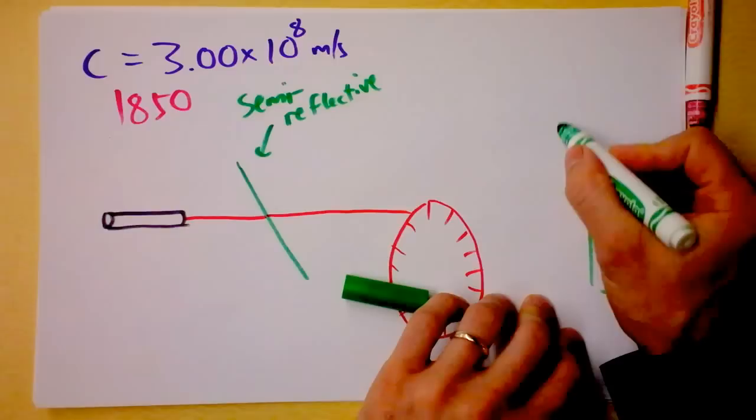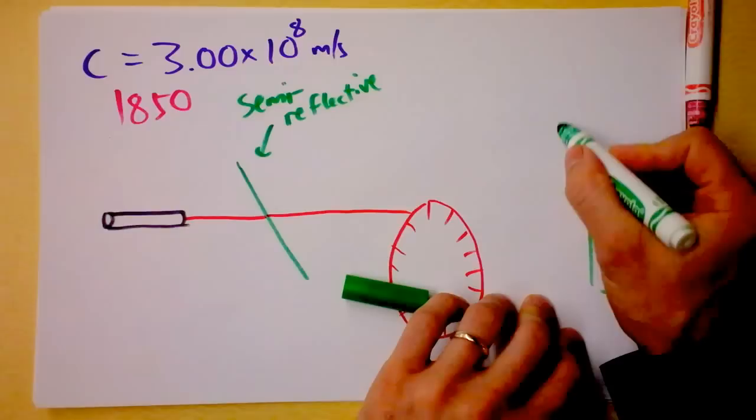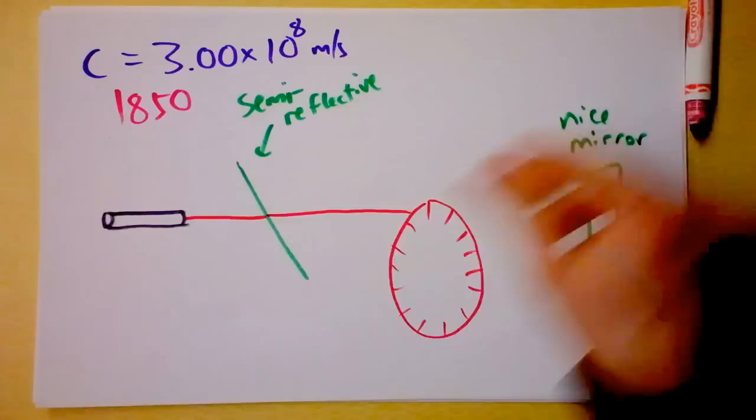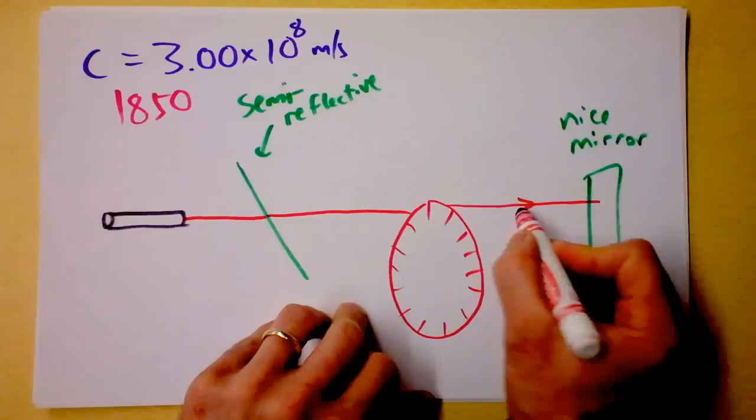This is a high-quality mirror. And the only way that laser beam can make it back, the only way the laser beam can come back, is if it happens to pass through another one of the slits.